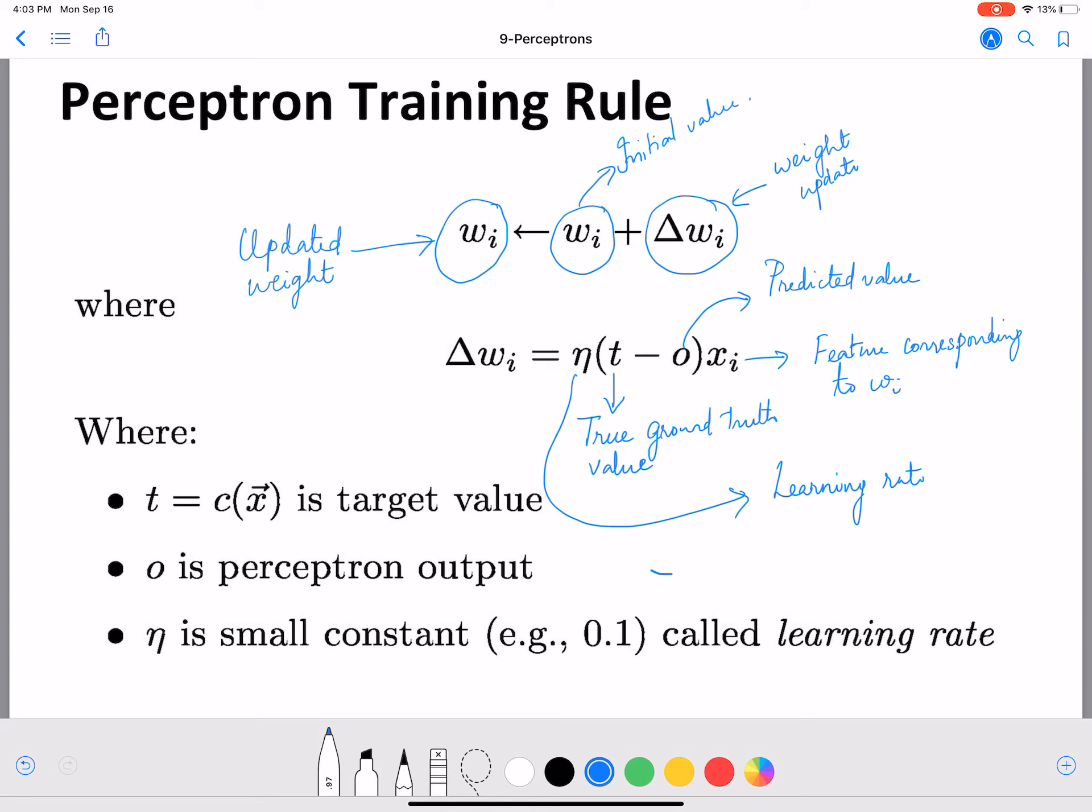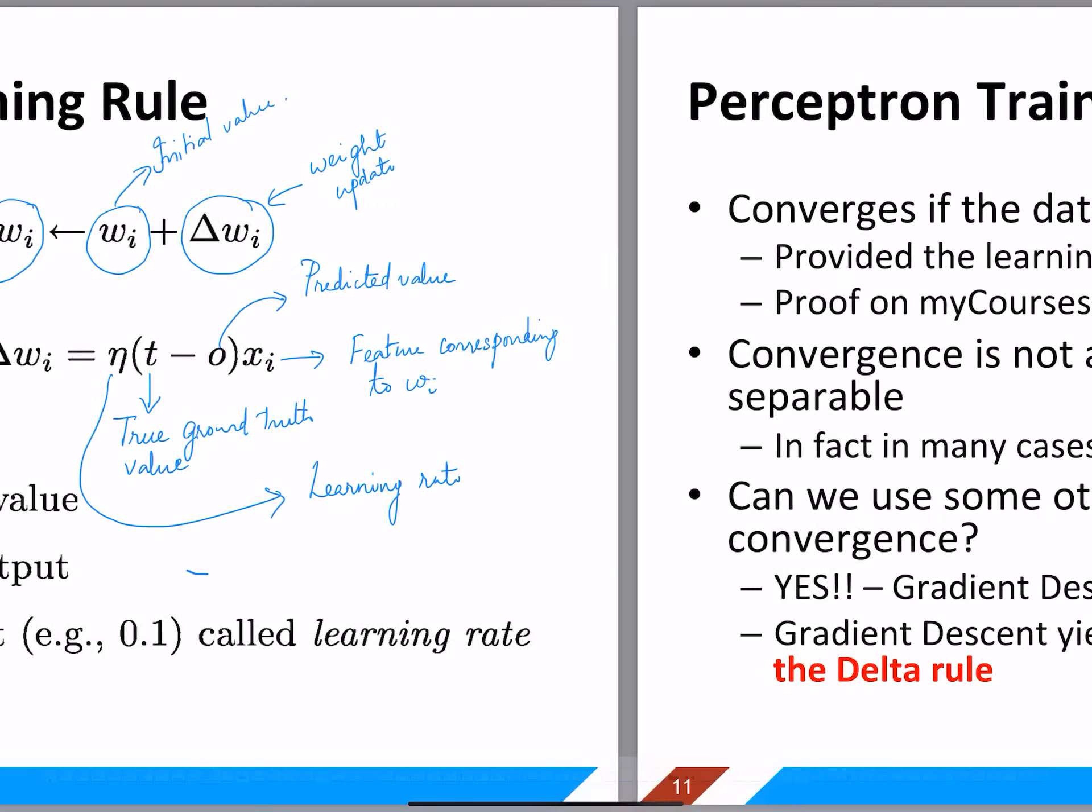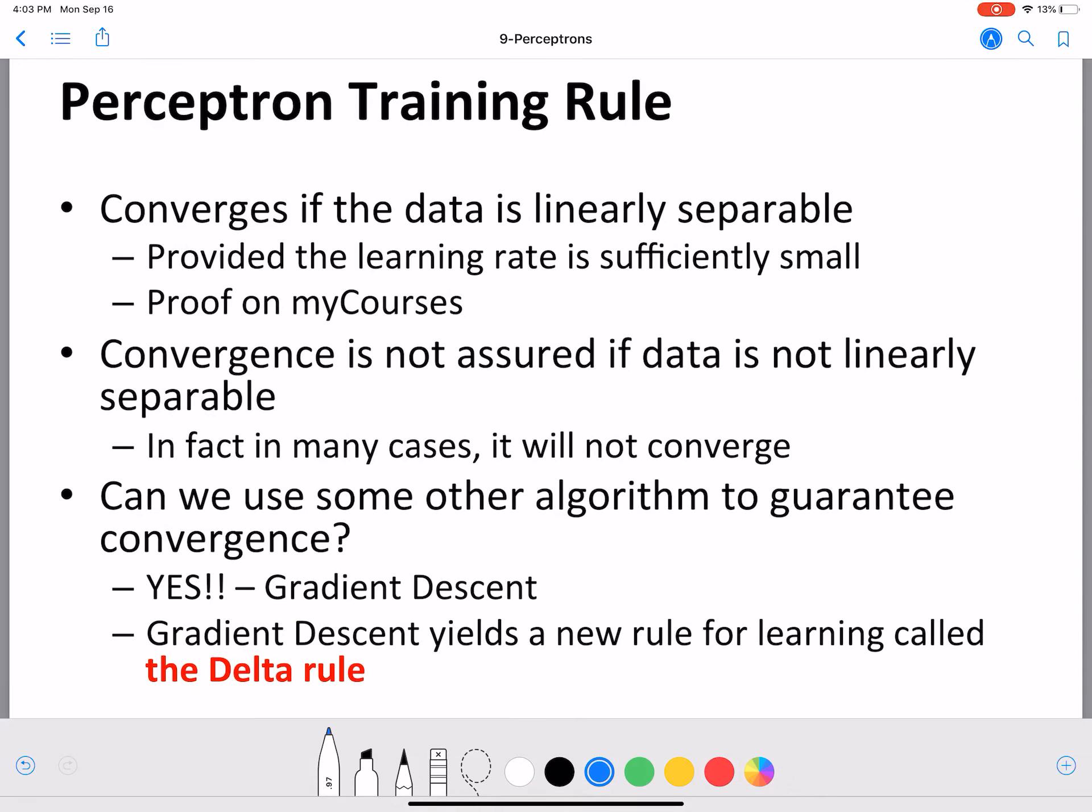The perceptron training rule converges if the data is linearly separable, and we also know that the learning rate should not be really huge, otherwise it will miss convergence. We saw that in gradient ascent in logistic regression, where if we have a higher learning rate it will have big step sizes, and convergence may be missed.